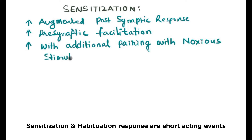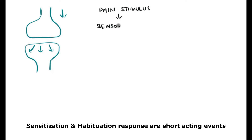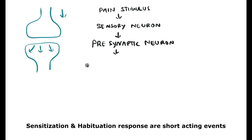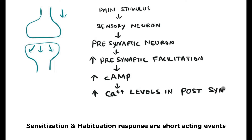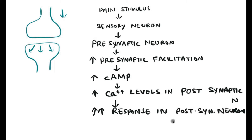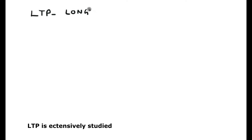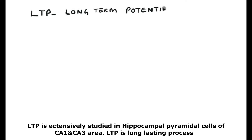Sensitization may increase with the addition of further noxious stimuli, so two noxious stimuli will reinforce the sensitization process. The sensitization and habituation processes are short-acting events. For example, when a pain stimulus activates the central nervous system, it increases facilitation in the presynaptic neuron, which may increase cyclic AMP at the synaptic level and thereby increases calcium levels in the postsynaptic neuron, increasing the response to pain — which is a protective and learning mechanism.